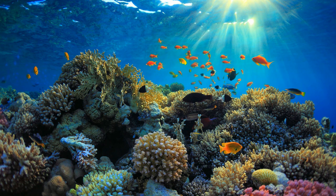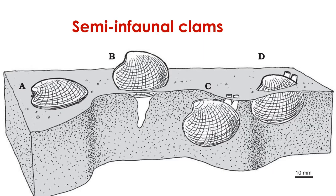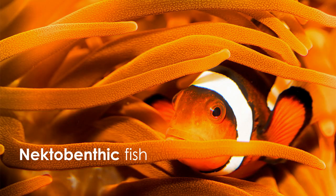Epifaunal organisms live on the seafloor but are surrounded by water; they include things like sponges, corals, crustaceans, and many types of fish and snails. The lines are a bit blurry — some organisms live halfway surrounded by sediment or halfway exposed above the seafloor; we say these organisms are semi-infaunal. There are also organisms capable of swimming but spending their entire lives close to the seafloor — somewhere between the nekton and the benthos — and we call these organisms nectobenthic.